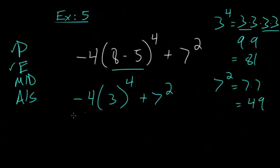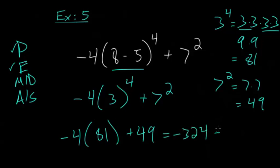So rewriting this, we have minus 4 times 3 to the fourth, but we know that's 81, plus 7 squared, which is 49. And then minus 4 times 80 would be minus 320. And then minus 4 times 1 is minus 4. So this would be minus 324 plus 49.